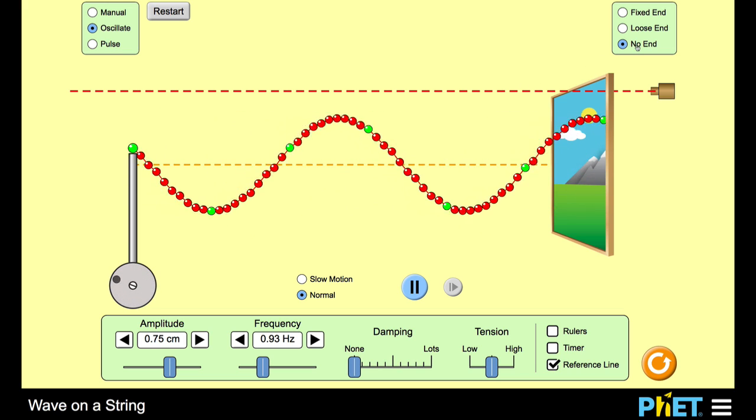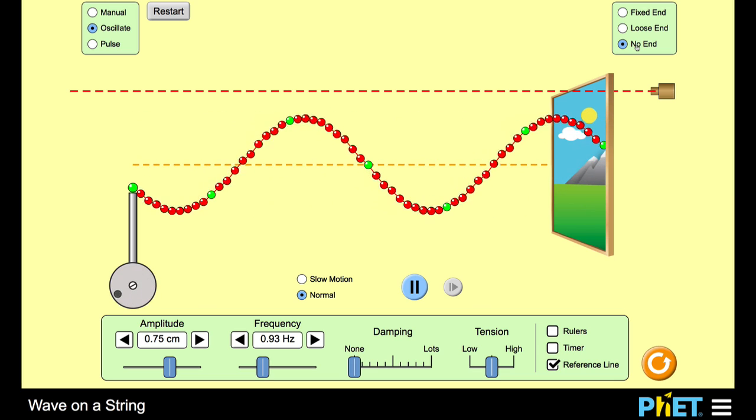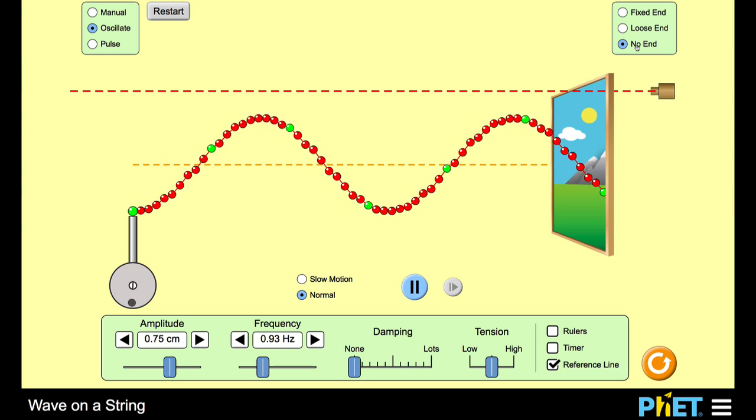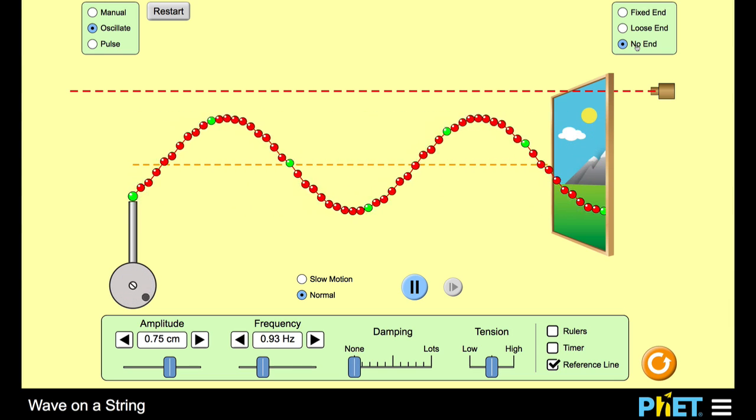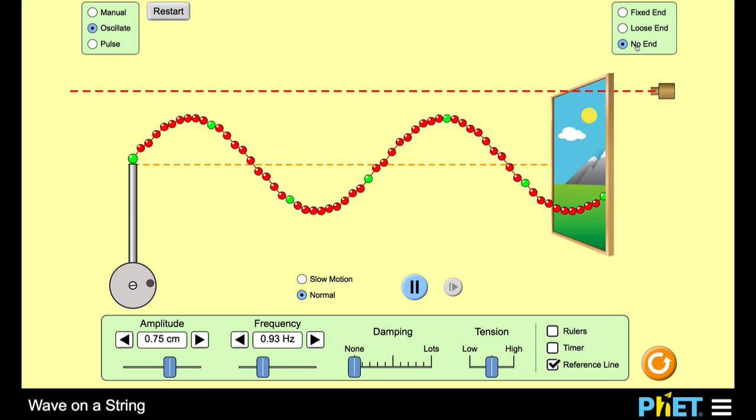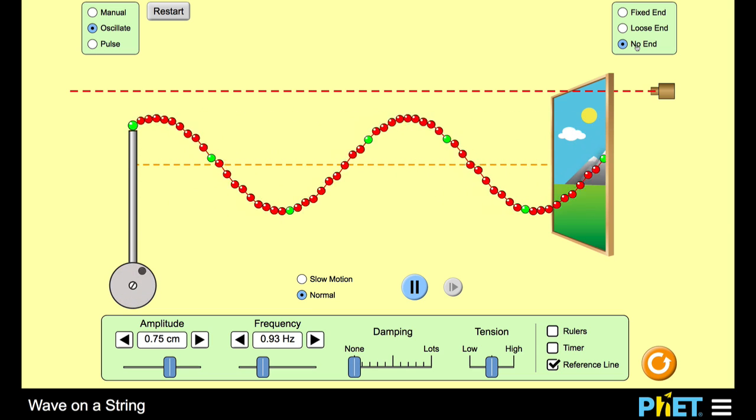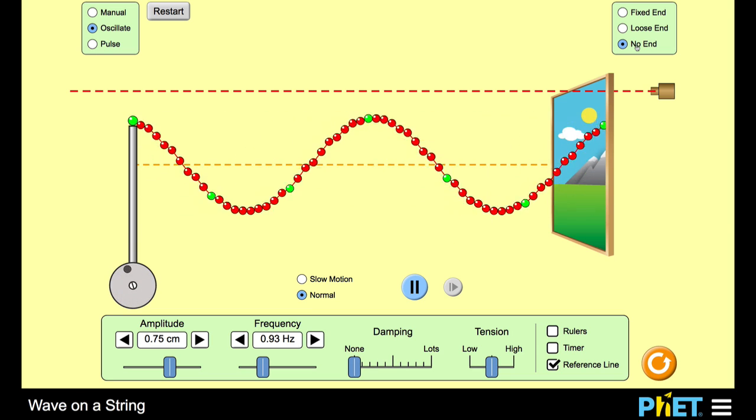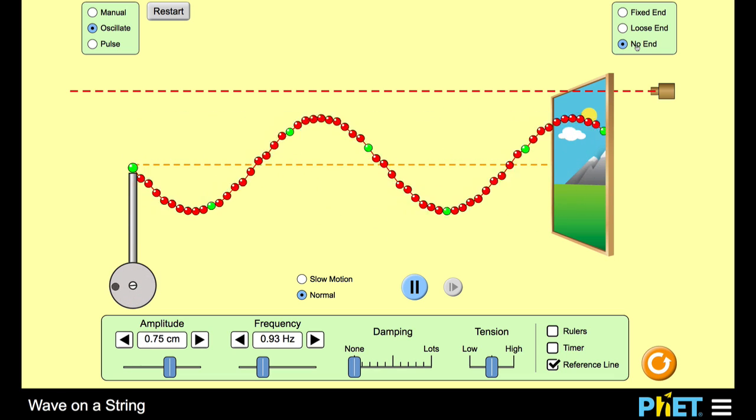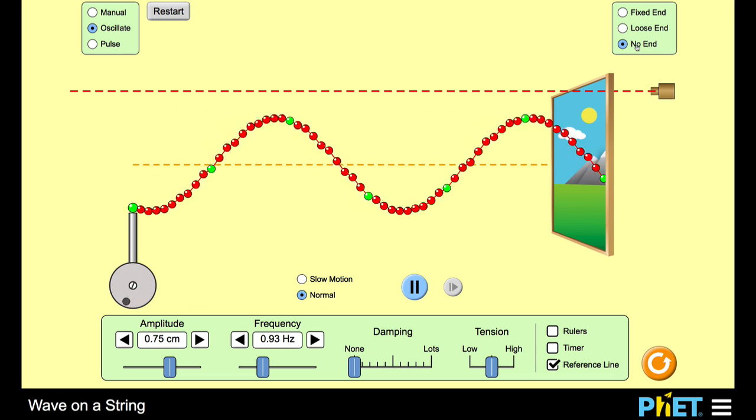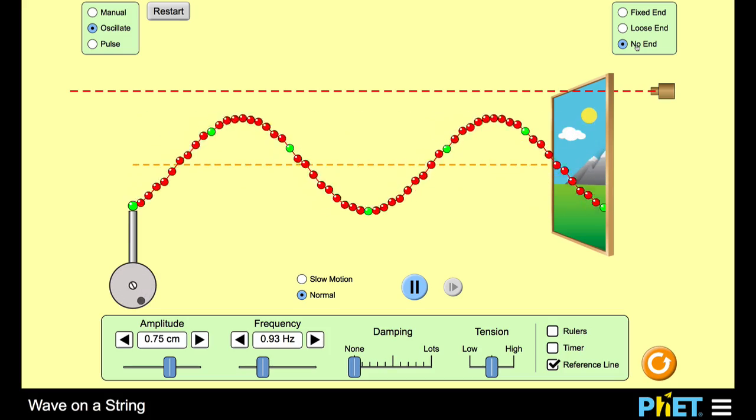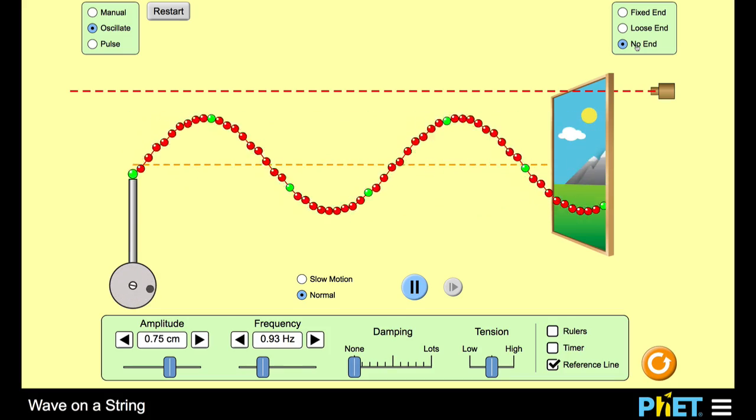Now, as a point of interest, I've set it to no end at the moment. This is so that we don't need to deal with reflections. We will be looking at reflections later, but that's a level of complexity that we don't want to deal with right now. So what we're going to try and do is write down an equation to describe this wave. Before we do that, we need to carefully define everything that we're going to be using in that equation.